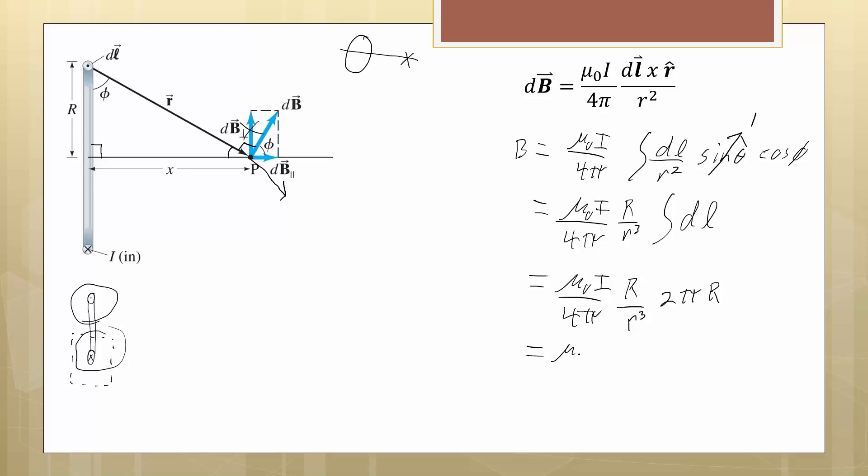So I end up with mu naught I big R squared over 2 times little r cubed, and since we're interested in a point along the axis, usually we want to be able to plug in a value for x. And so we're going to make the same substitution where we can say that little r is big R squared plus x squared. So our final expression is going to be this to the 3 halves power.